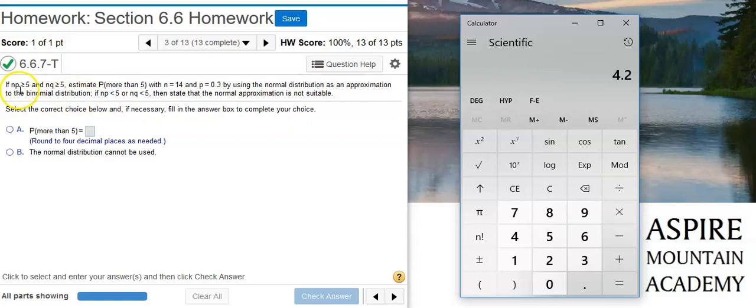It could be that if this product was greater than 5, so this requirement was met, but then this requirement over here was not met, then again I'd come to the same conclusion. I can't use the normal to approximate the binomial. You have to have both of these requirements met in order to do that.